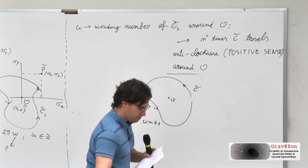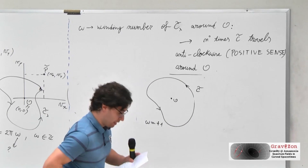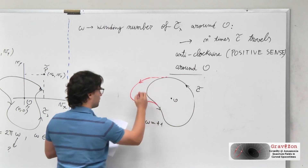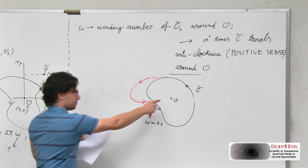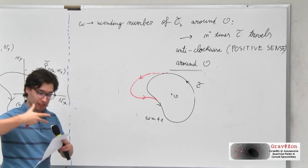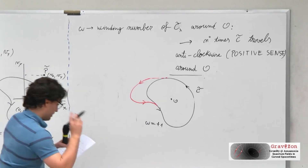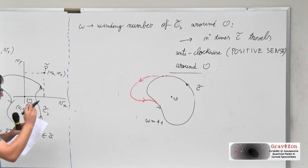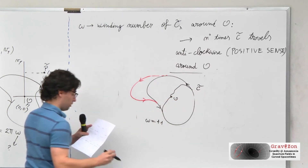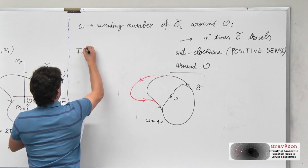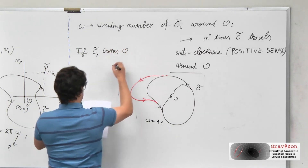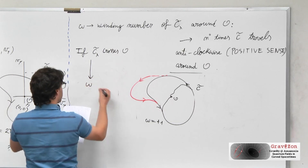If we take this curve C-tilde and make a continuous deformation without intersecting point O, it doesn't matter how much you deform it — as long as it doesn't intersect O, this topological quantity remains the same. This gives it a topological character. This quantity only changes when the curve, during modification, intersects or is about to intersect point O. So if C-tilde lambda crosses point O, this quantity W can change.